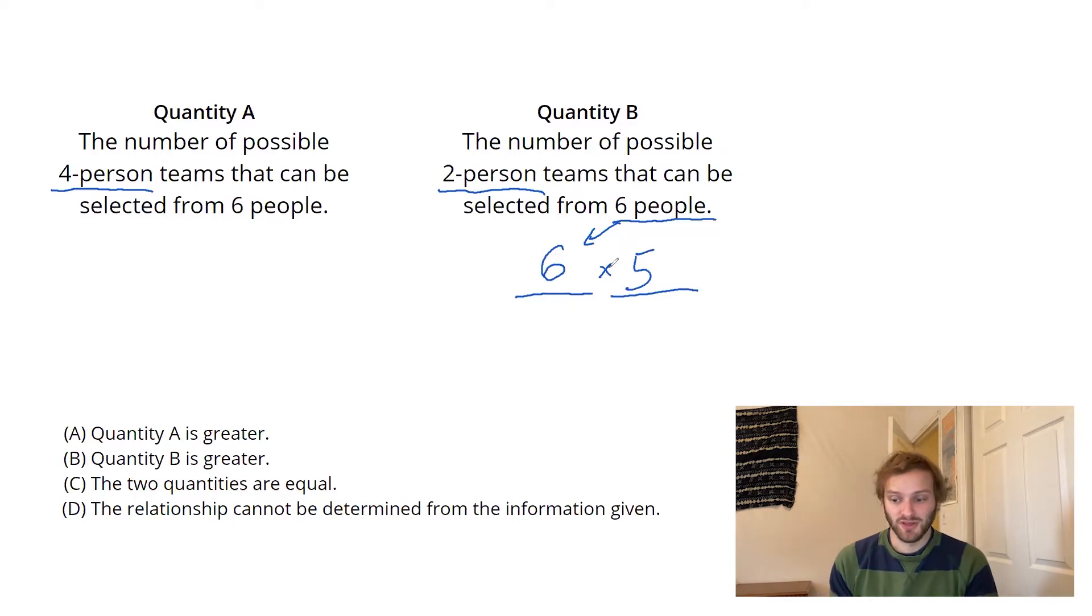Why am I multiplying? Because once I've chosen my first person, when I choose my second one, it's almost like I'm branching into different parallel universes, multiple ways where I could have made that choice.